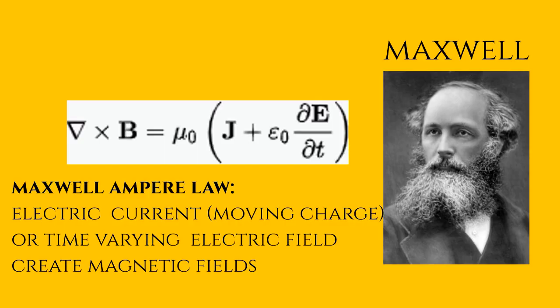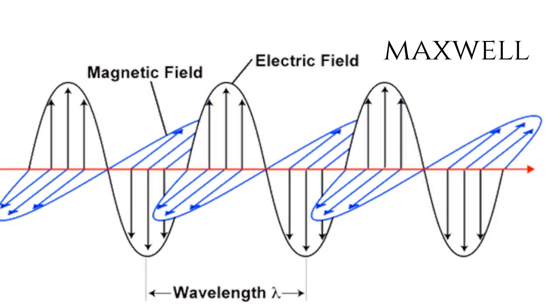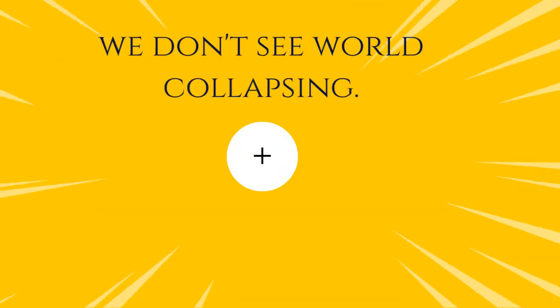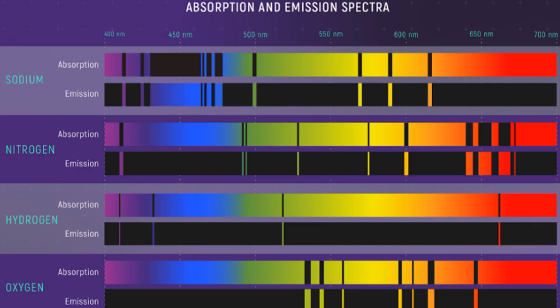From the works of Faraday and Maxwell, we know that a moving charge produces an electromagnetic field. Hence, electrons revolving around the nucleus should produce electromagnetic energy and emit light, eventually losing their energy and collapsing into the nucleus. As per the calculations, this would happen within 10⁻¹¹ seconds. However, we don't see the world around us collapsing. Furthermore, Rutherford's atomic model couldn't explain how unique spectral lines are formed for different atoms.